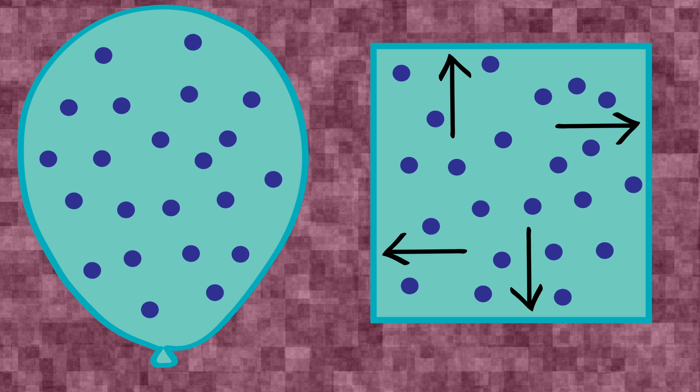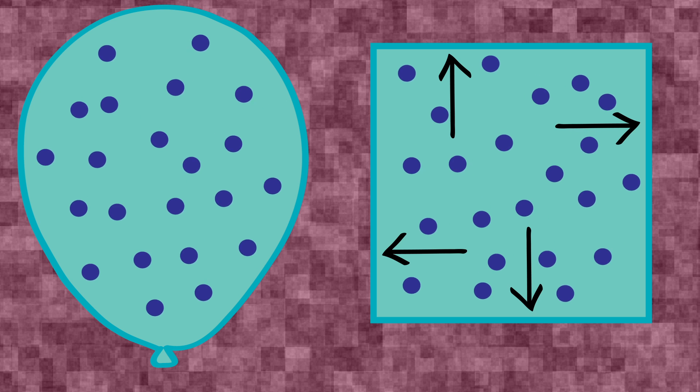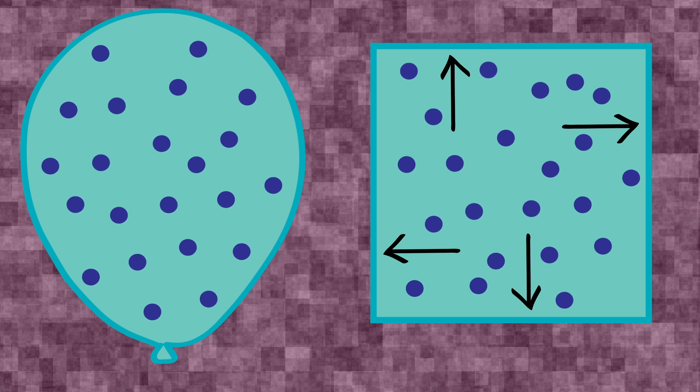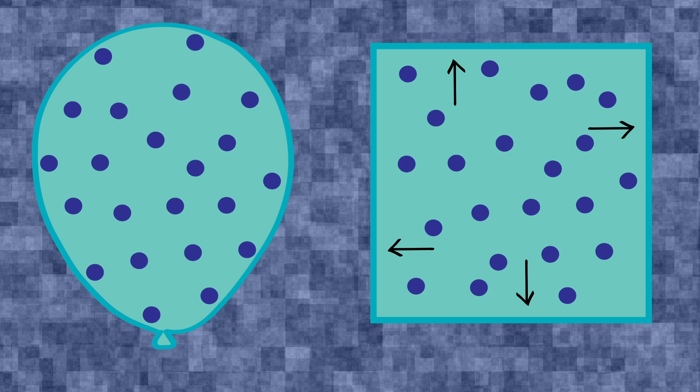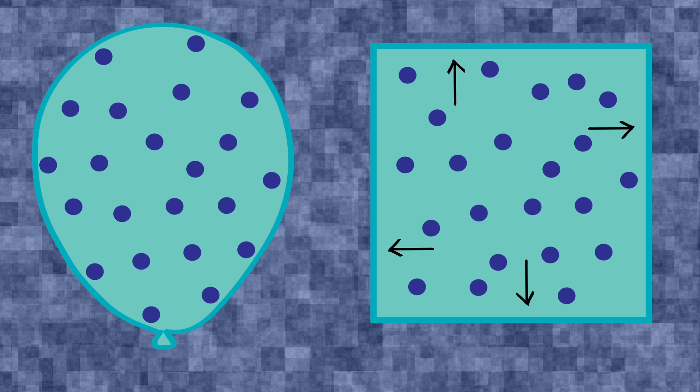Now, in a gas, you have a lot of molecules moving around very quickly, spread apart from one another. If you cool the gas down, these molecules slow down and stop moving about so much. The volume of the gas drops, as does the pressure it is exerting on its container.